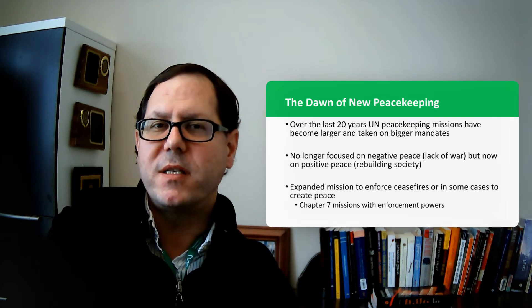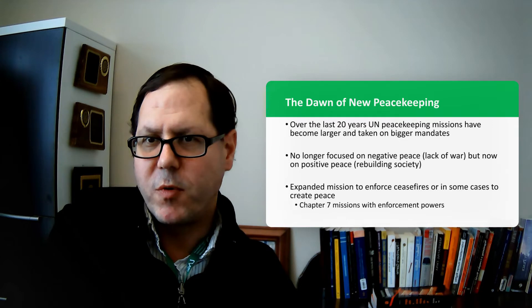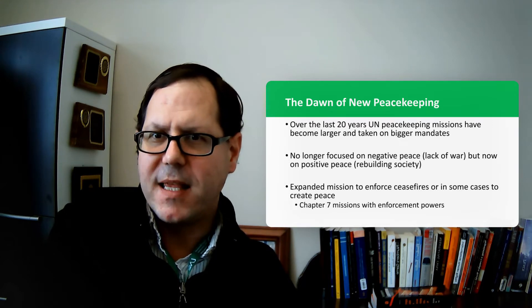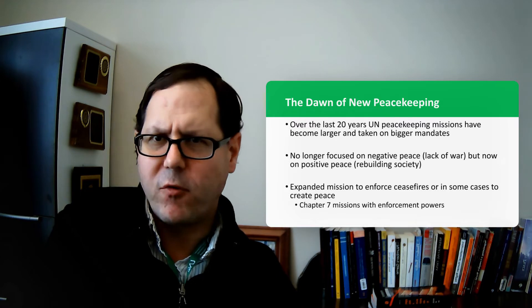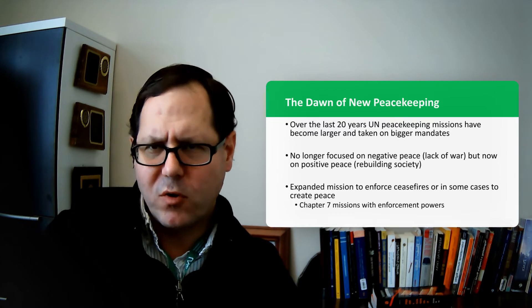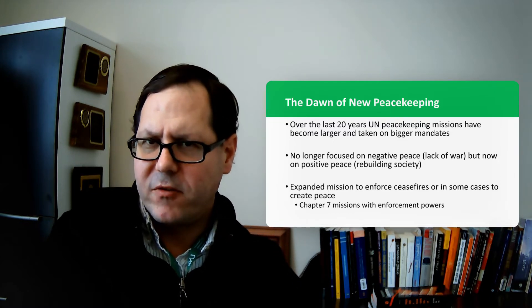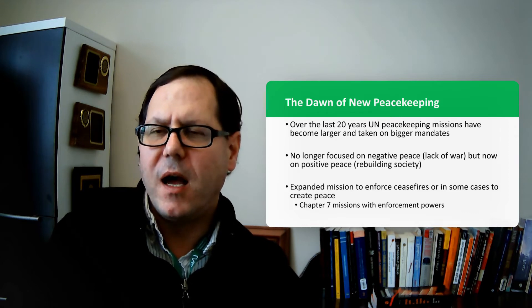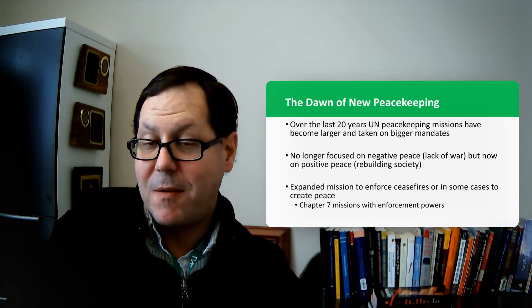But when the Soviet Union collapses and the international system goes through a period of upheaval, Secretary General Boutros Boutros-Ghali decides that the UN can do more and commissions a report called an Agenda for Peace, which comes out in 91 or 92, which argues that the UN peacekeeping structure can do a heck of a lot more than it did during the Cold War. It can do not just monitoring, but it can also maybe help facilitate peace, and in some cases maybe even create peace.